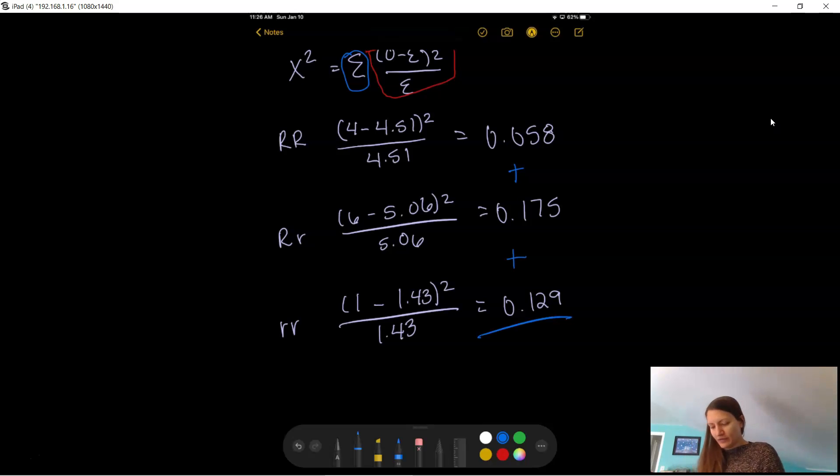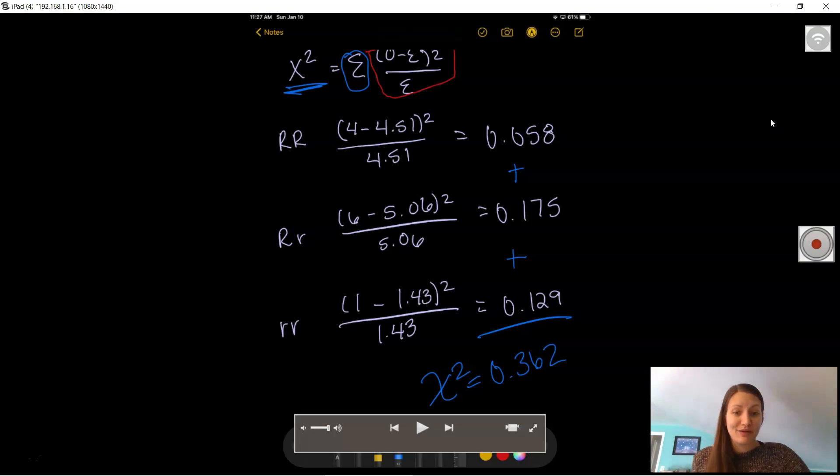So we're going to add each of these terms together. And what we get is 0.058 plus 0.175 plus 0.129. So I get 0.362. This is my chi-square value. Because remember, the equation is chi-square equals this series. Now again, you might be tempted to be like, oh, let me take the square root. But don't. We're specifically solving for chi-square. Our problem ends here. So you should have gotten a value of chi-square equals 0.362.